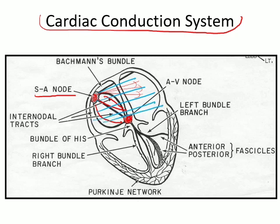Then there comes the Bundle of His, which further divides into a right bundle branch and a left bundle branch. The left bundle branch further divides into an anterior fascicle and a posterior fascicle. As you can notice from this diagram, the posterior fascicle is thick and stout compared to the anterior fascicle — this has clinical importance that will be highlighted in the lecture on bundle branch blocks. The fascicles and the right bundle branch divide into the Purkinje network.